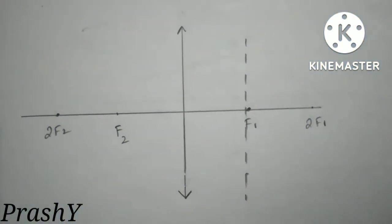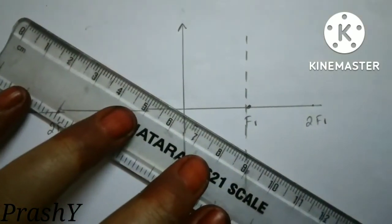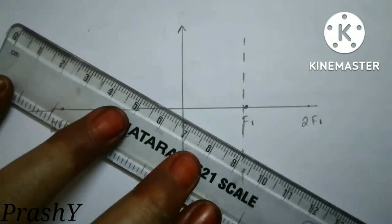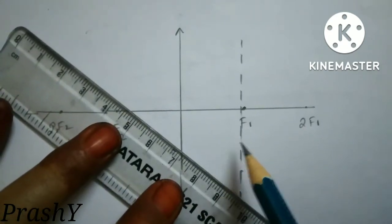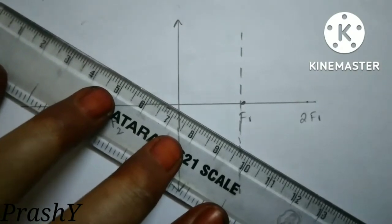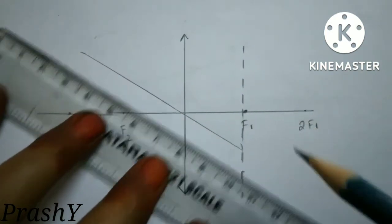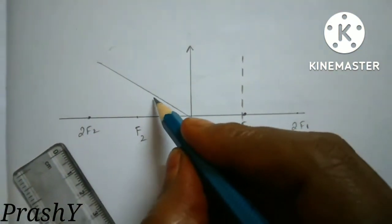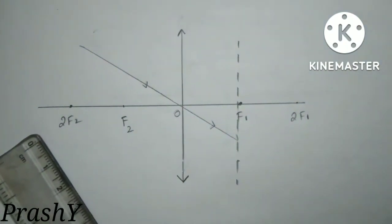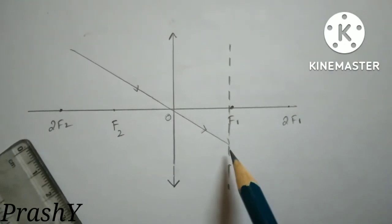Now we have to draw a ray making some angle with the principal axis. I will take a ray passing through the optic center. So the first ray I have to draw is a ray passing through the optic center. This is the optic center. We know that the ray which is passing through the optic center always proceeds undeviated.